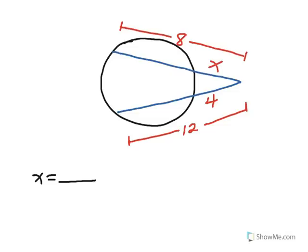In the next example, we have two secant segments drawn to the circle from an external point. The whole piece times the external piece equals the whole piece times the external piece. So 8 times X equals 12 times 4, giving 8X equals 48, so X equals 6. This figure is not drawn to scale, but you get the idea.